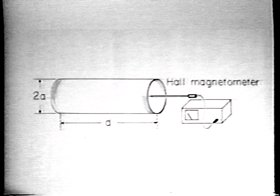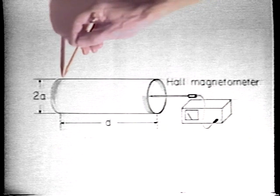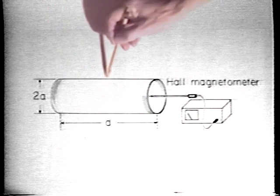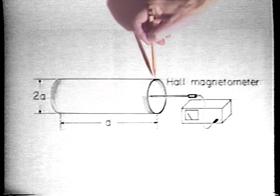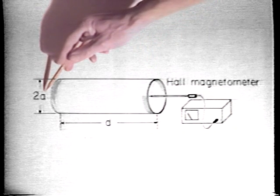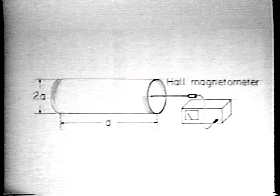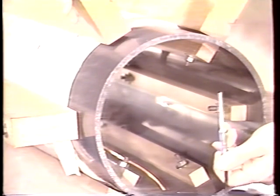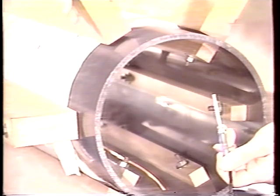The solenoidal coil consists of n turns, essentially uniformly wound over the length d, each turn carrying the same current i. The radius is a. The current i is essentially phi-directed. This axial Hall probe shows us the magnitude and direction of the field.